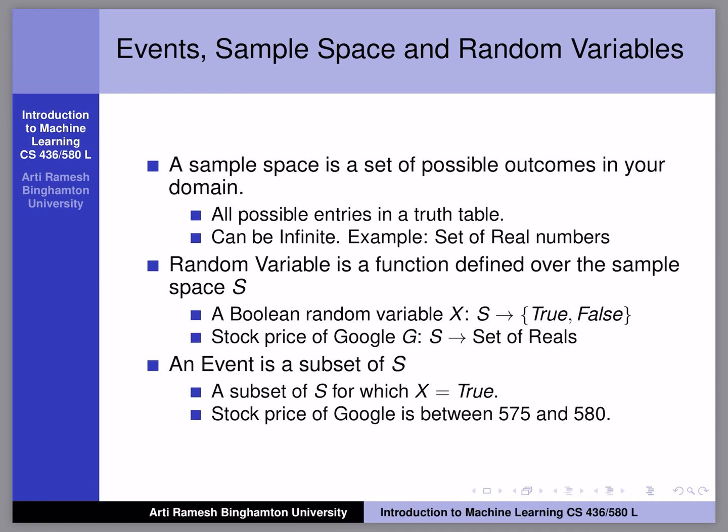In this lecture we will be looking at some basics of probability for machine learning. We'll start with events, sample spaces, and random variables. A sample space is a set of possible outcomes in your domain. For example, a coin can land heads or tails, so your sample space is the set {heads, tails}. You will often see this in the form of a truth table showing possible outcomes along with their probabilities. The sample space can also be infinite, such as a set of real numbers.